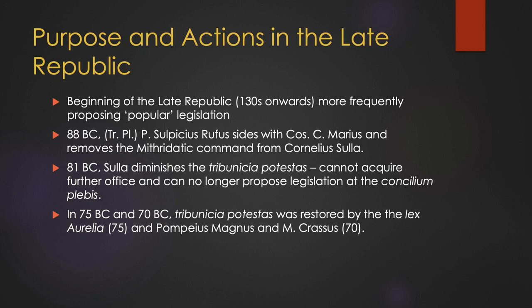In 88 BC, the Tribune of the plebs Publius Sulpicius Rufus, in an effort to push through some of these popular measures, sided with the consul Gaius Marius to overturn the assignment of an important command against Mithridates in the East. In retaliation, Sulla marched on Rome and killed the Tribune, violating his sacrosanctitas. Years later, in 81 BC, following the civil war fought between Marius and Sulla, in an attempt to strengthen the position of the Senate and senior magistrates, Sulla enacted legislation that diminished Tribunicia Potestas.